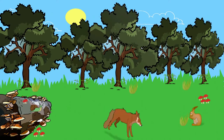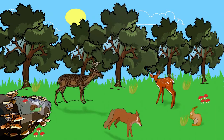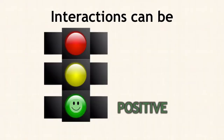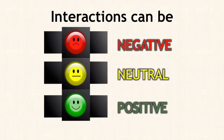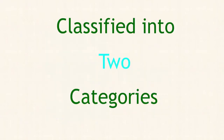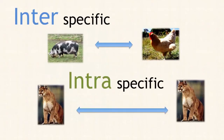All species in a community will interact or affect each other in different ways, and interactions can be positive, negative, or neutral. Ecological interactions are classified into two categories: either inter- or intraspecific.